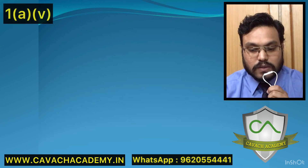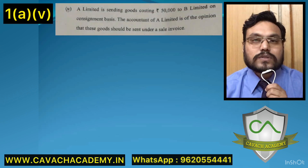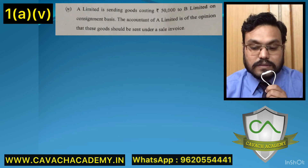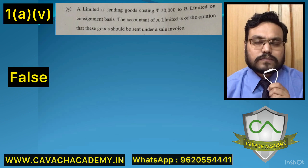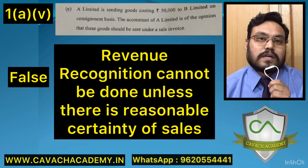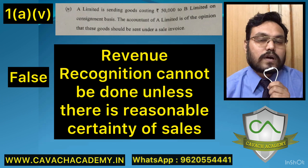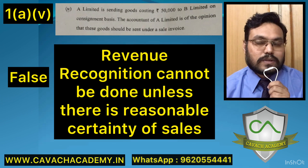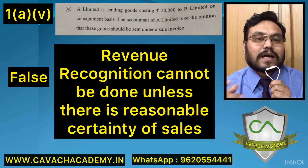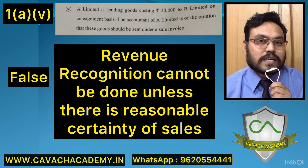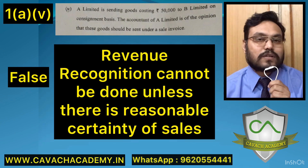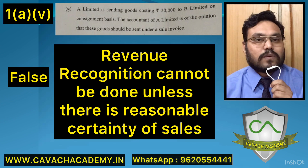Fifth question in 1a: A Limited is sending goods costing 50,000 rupees to B Limited on a consignment basis. The accountant is of the opinion that these goods should be sent under a sales invoice. The answer is FALSE. This is about revenue recognition — once you book a sales invoice, revenue is recognized in the P&L. Revenue should only be recognized when ownership of the goods is transferred, i.e., when the sale actually happens.